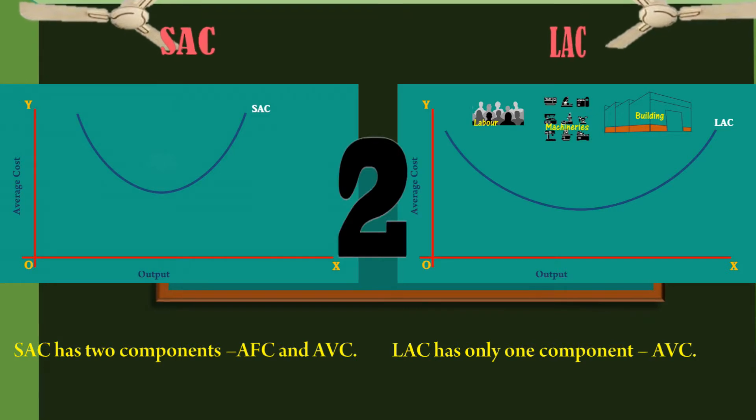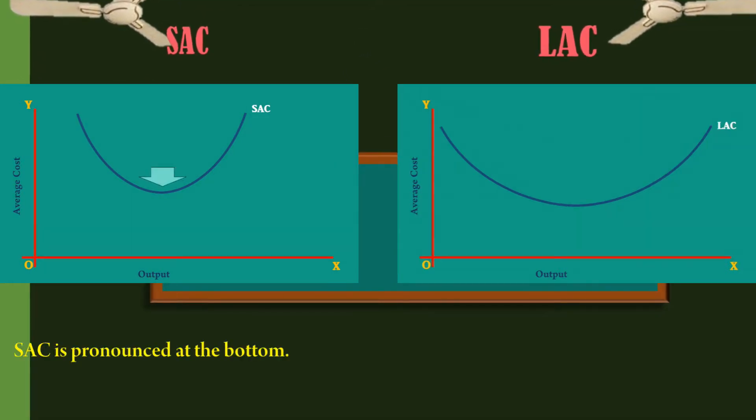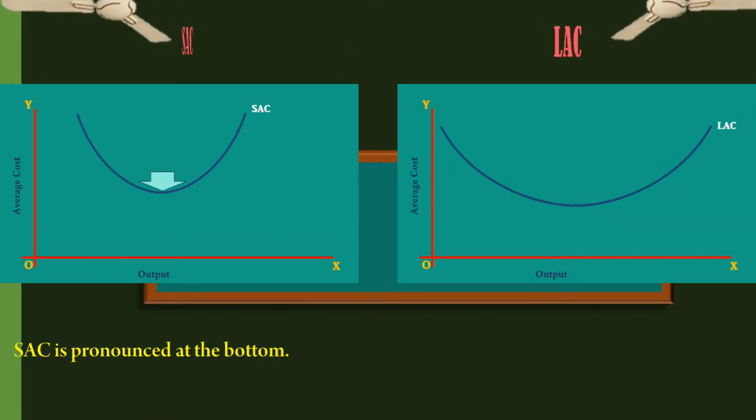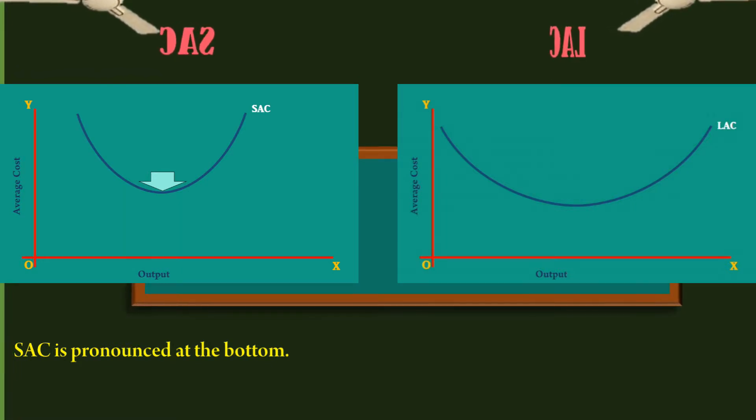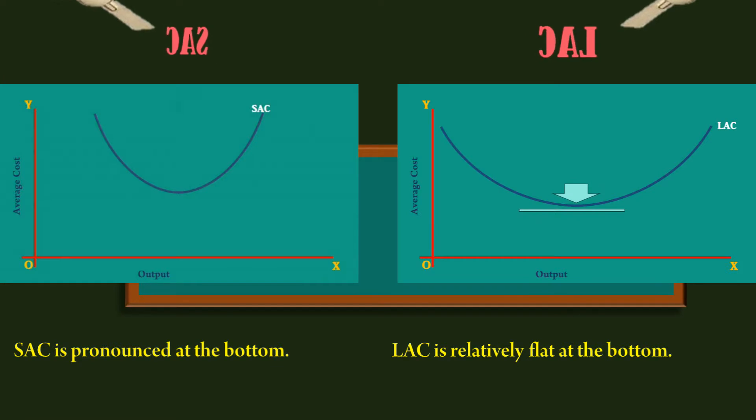2. The U-shape of the short run average cost curve is pronounced at the bottom. The bottom of the long run average cost curve is relatively flat.